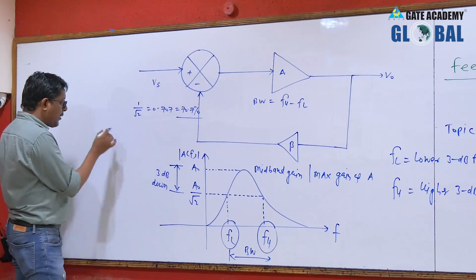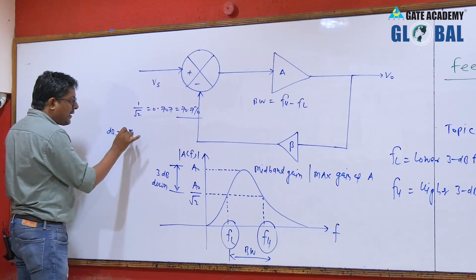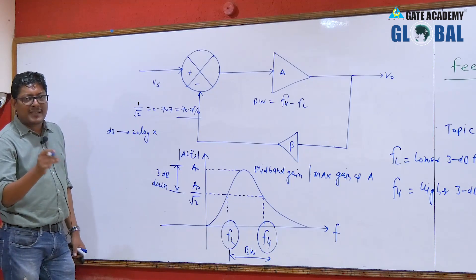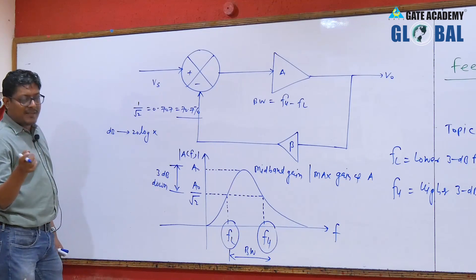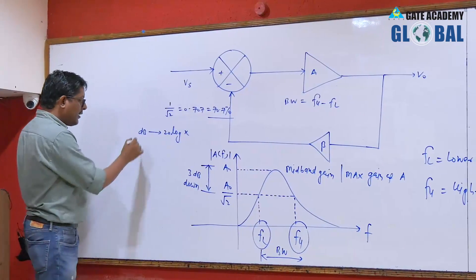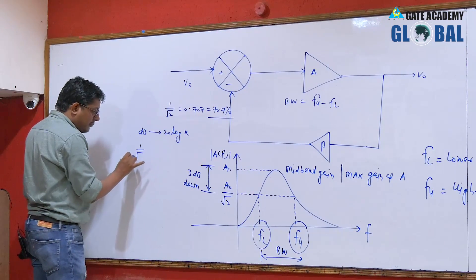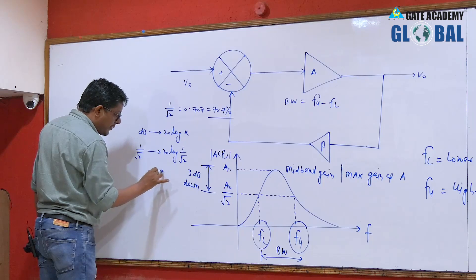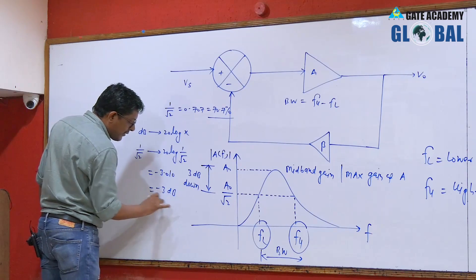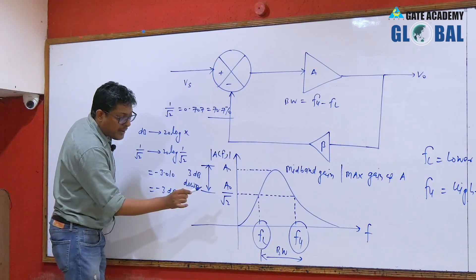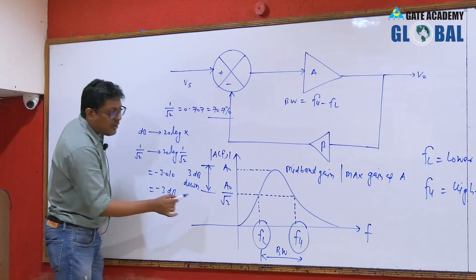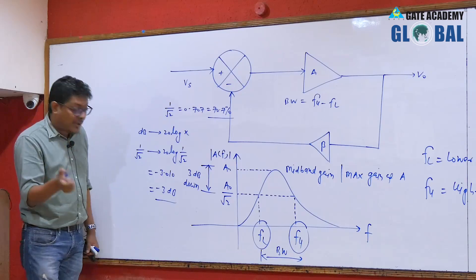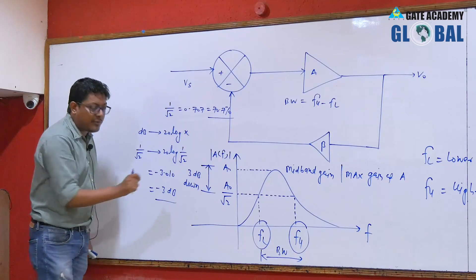Why this 3dB frequency? Because in case of dB representation, we represent any quantity X as 20 log X — in terms of voltage gain or current gain. If I am considering 1 by root 2 in terms of dB, that means 20 log (1 by root 2), which equals minus 3.010, that means minus 3dB. That's why we use the term 3dB frequency — because at this frequency the gain will be 1 by root 2 times, or 70.7% of its mid-band value.